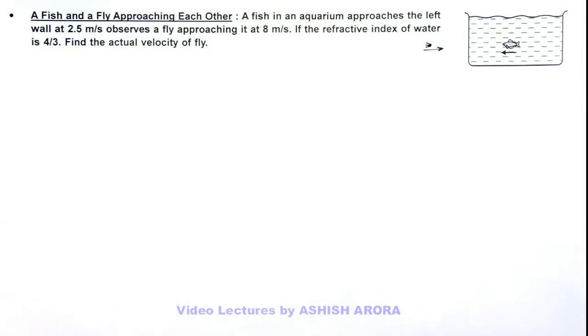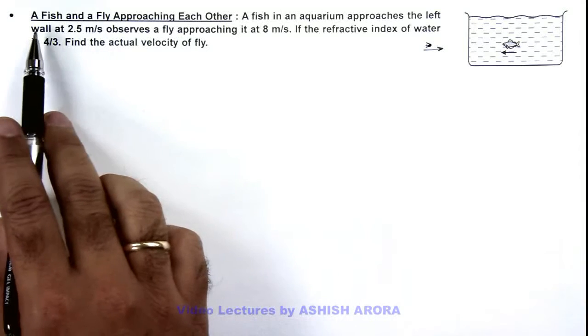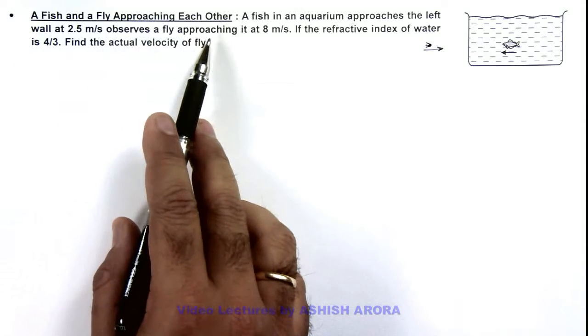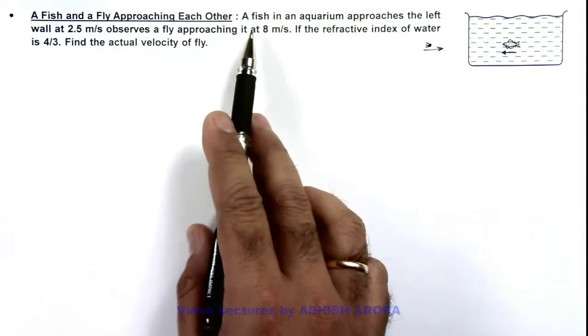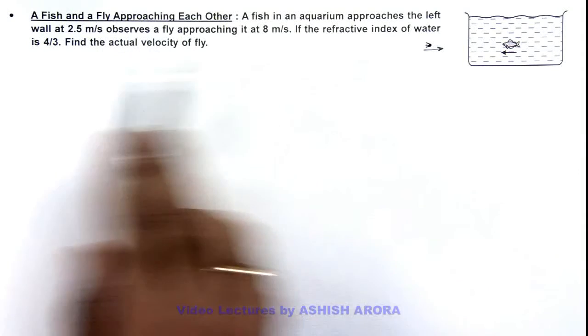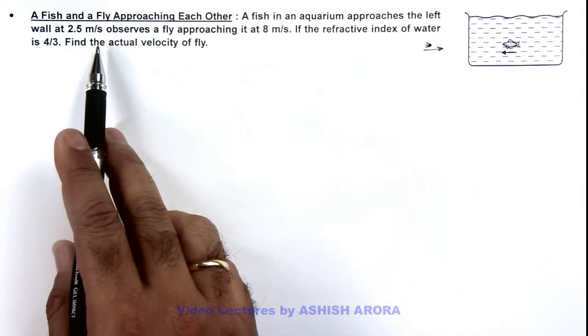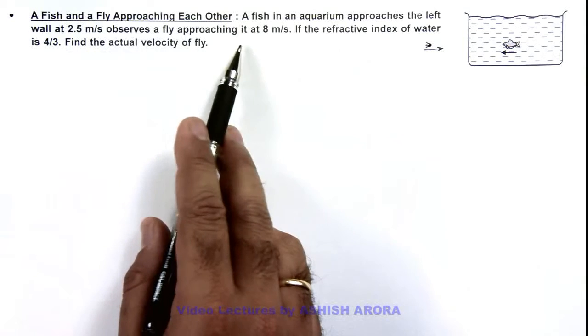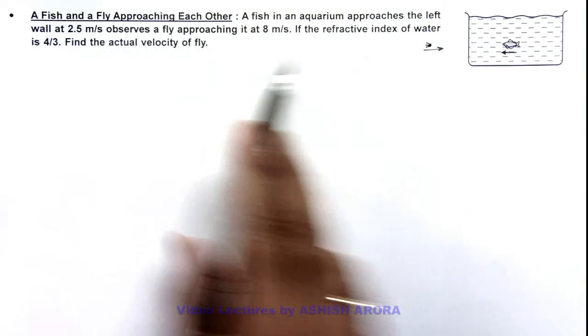In this illustration we'll analyze the situation when a fish and a fly approaching each other. Here we are given that a fish in an aquarium approaches the left wall at 2.5 meters per second observes a fly approaching it at 8 meters per second.